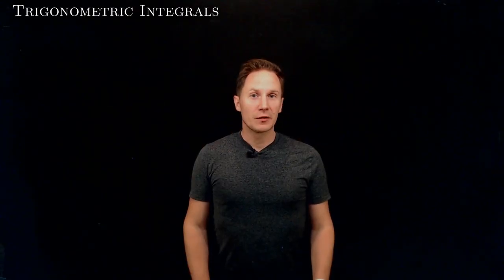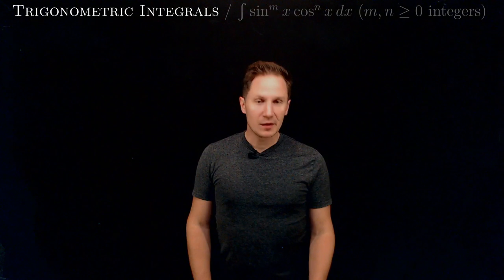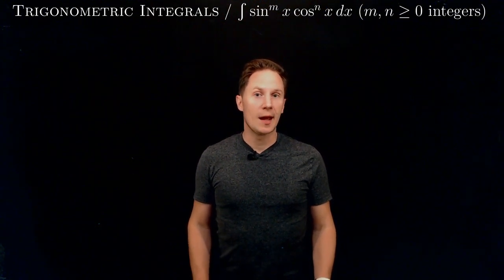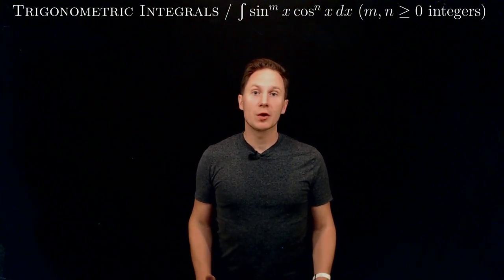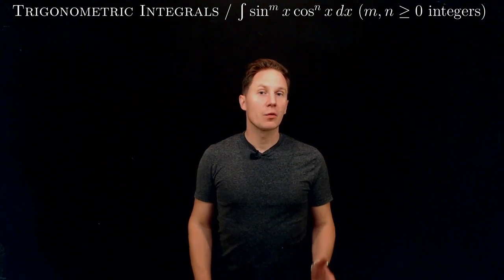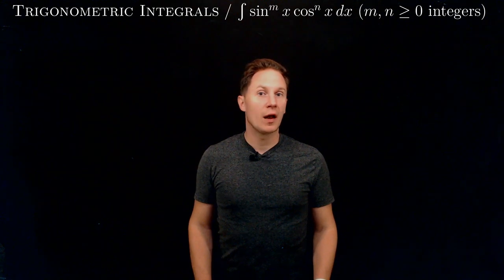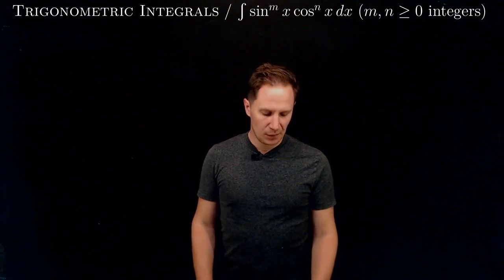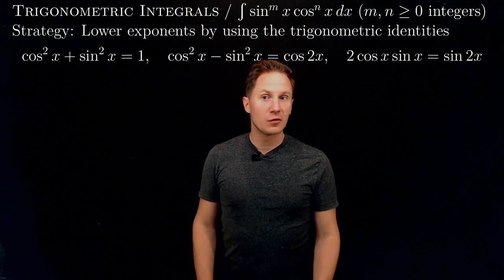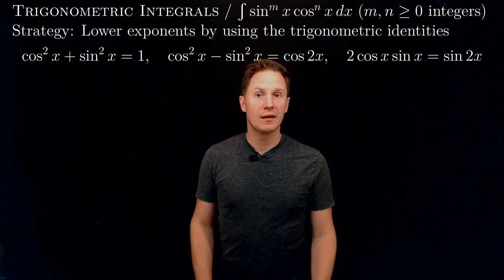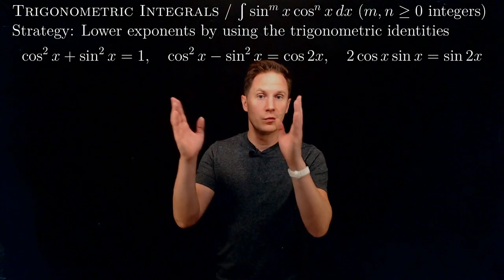Let's solve some trigonometric integrals. In particular, let's consider the integral of sin(x) to the m times cos(x) to the n dx, where m and n, the exponents, are non-negative integers. Our strategy will be to lower these exponents m and n using trigonometric identities.